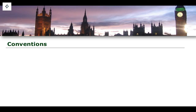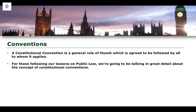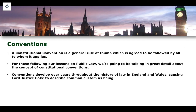Beginning first with convention. A constitutional convention, as you will learn when you study public law — or in some universities they may call it constitutional and administrative law — can be described as a sort of general rule of thumb which is agreed upon by everyone and is followed by all to whom it applies. When we get into public law we will look at constitutional conventions in great detail, but this is considered to be a non-legal constitutional source.